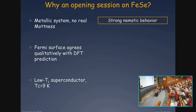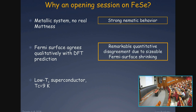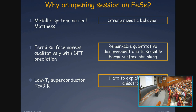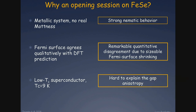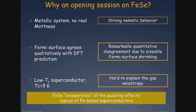It's true it's a metallic system, but it has a very strong nematic behavior, and I will try to explain what nematicity is. The Fermi surface agrees qualitatively with DFT, but there is a remarkable quantitative disagreement due to the fact that the Fermi surface is much smaller than predicted. This low Tc superconductor is the one in the iron pnictides family where it is much more difficult to explain the gap anisotropy — an issue that several theory groups are fighting on recently. In some sense, iron selenium exasperates all the puzzling effects present in general iron-based superconductors.